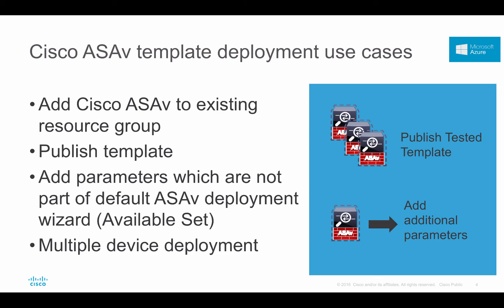The second use case is if you have already tested a working ASA where you have supplied additional attributes like availability set. These kinds of tested templates you can publish with your customers and partners so that they can leverage your work as well and deploy similar kinds of ASAs in their Azure environment.